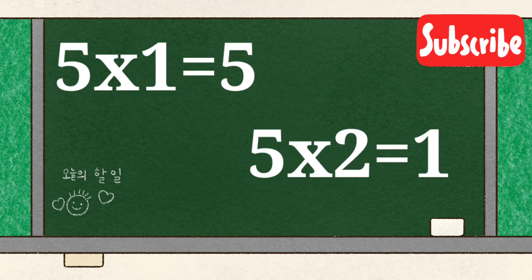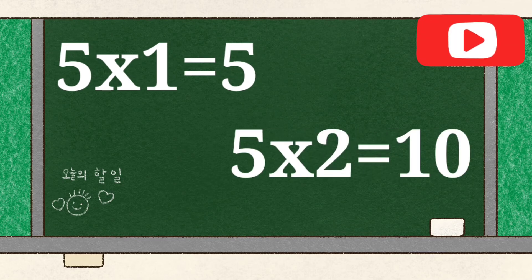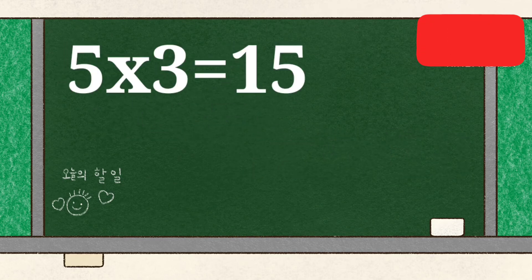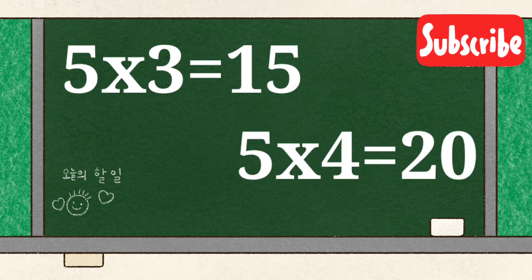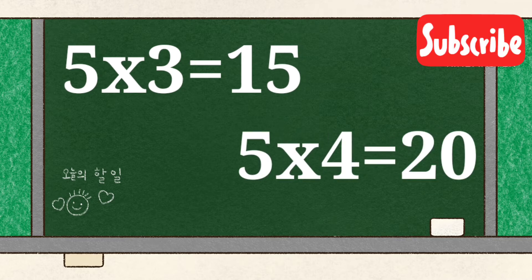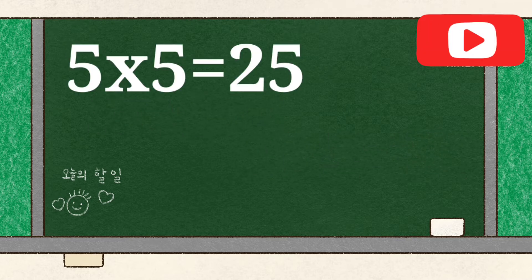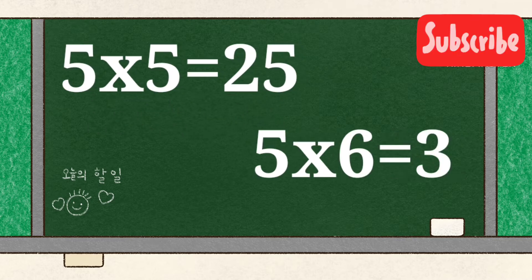5 1's are 5, 5 2's are 10, 5 3's are 15, 5 4's are 20, 5 5's are 25,